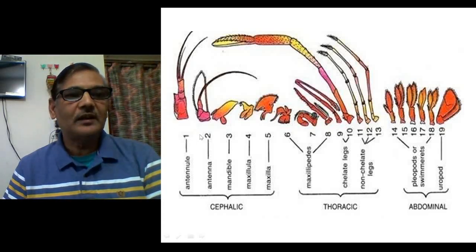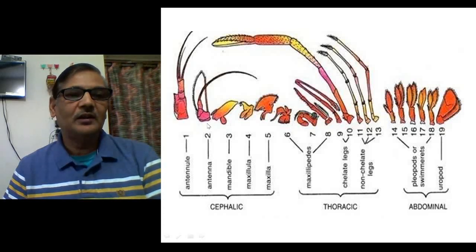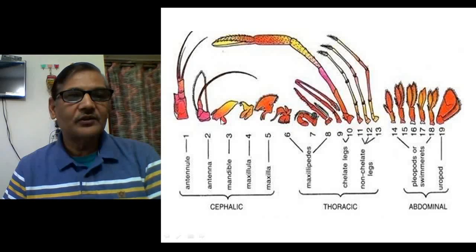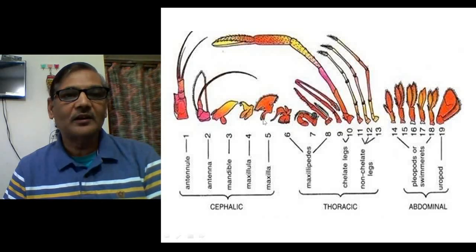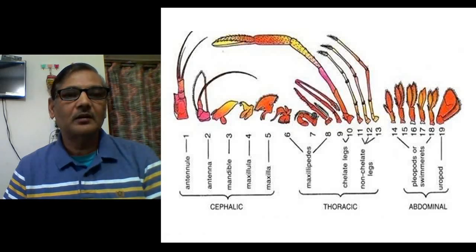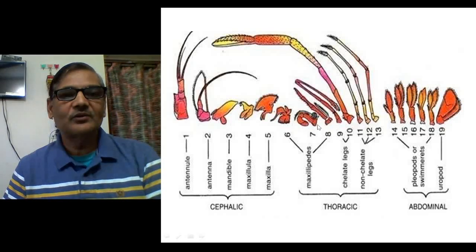The antennule and antennae are the anteriormost structures and are sensory structures used to detect the presence of different objects, even food, in the surrounding. Then there is the mandible — the third pair of appendages — used to masticate food. Maxillula and maxilla are used to grip food and bring it close to the mandible. Maxillipedes are also used to manipulate food.